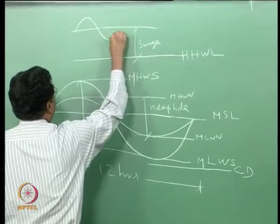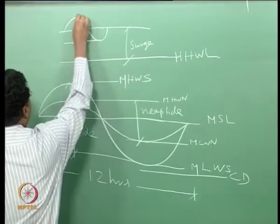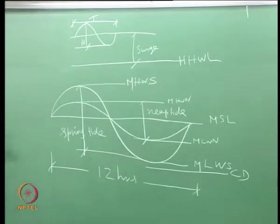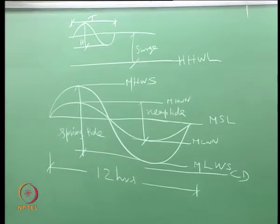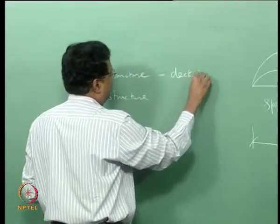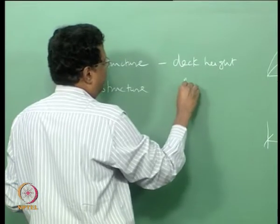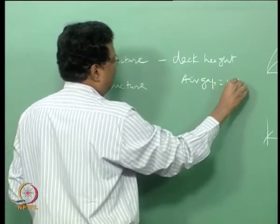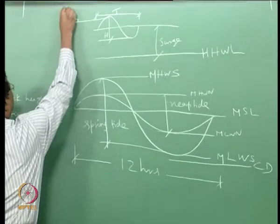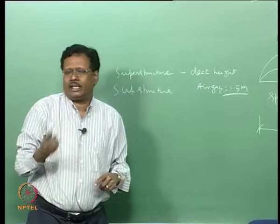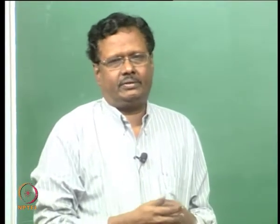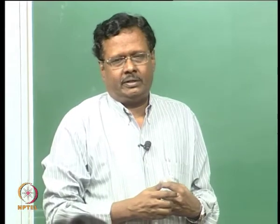Above the surge you have waves. This is called the wave height and this is called the wave period. The top of the superstructure must account for an air gap — typically about 1.5 meters. So on top of the surge level, you give an air gap of 1.5 meters, then the deck height, and then fix the top of the deck level. Otherwise it will be a problem.